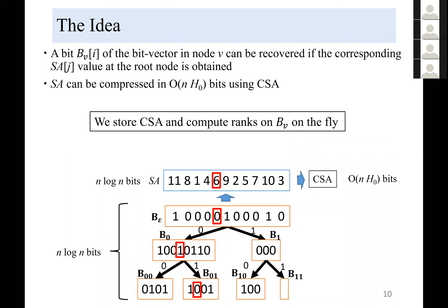Now I'll explain the basic idea of our data structure. We want to use the wavelet tree for range search, but if we store it explicitly, the space is n·log(n) bits, which is too large. We want to compress it. The bits in the wavelet tree come from the numbers in the suffix array.